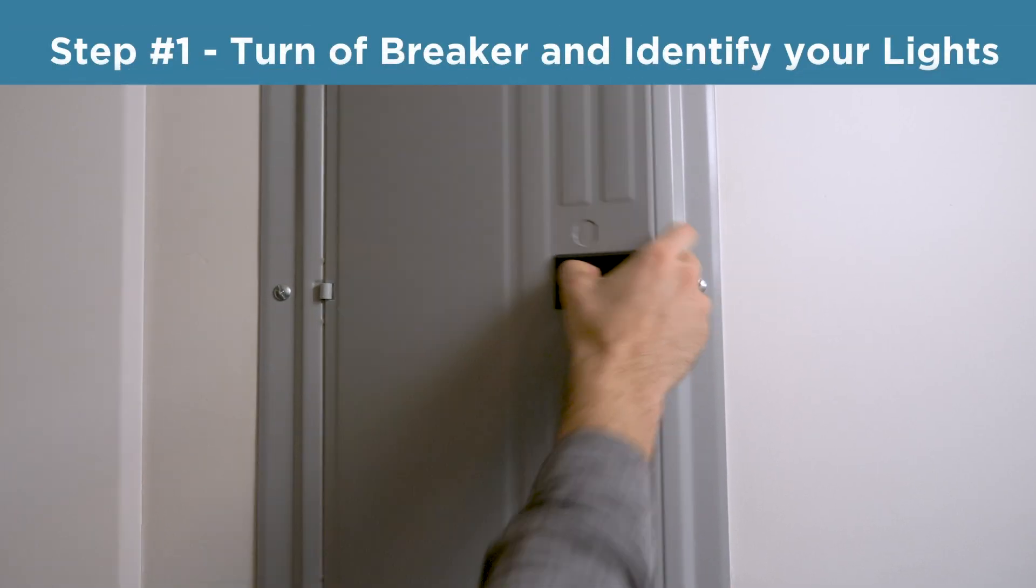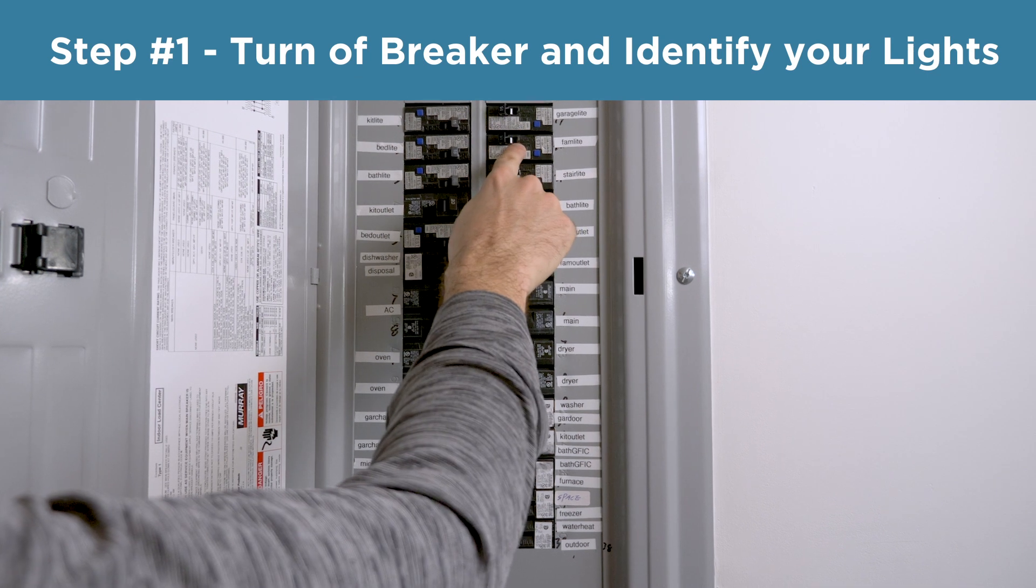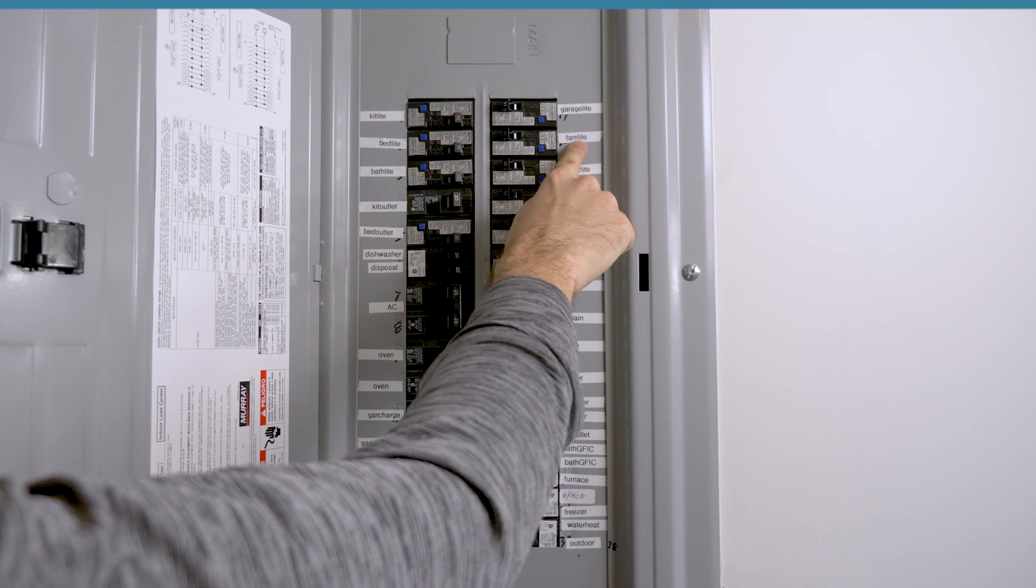First, find your circuit breaker and make sure to identify the switch for the place that your light is located in and turn this off.